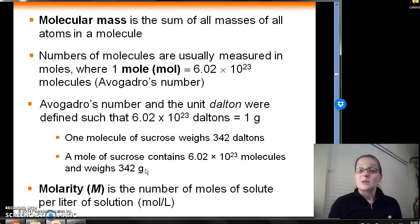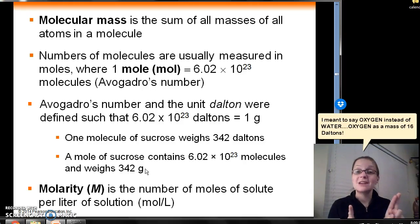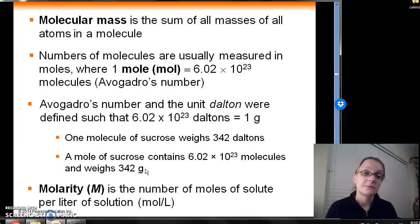If we were to take water, for example, molecular formula for water is H2O. Each hydrogen atom weighs about one Dalton. We have two of those. So that's a total of two Daltons for the Hydrogens. And the oxygen atom itself is about 16 Daltons. So when we add 2 plus 16, we get 18. Mass of one molecule of water is about 18 Daltons. An approximation.